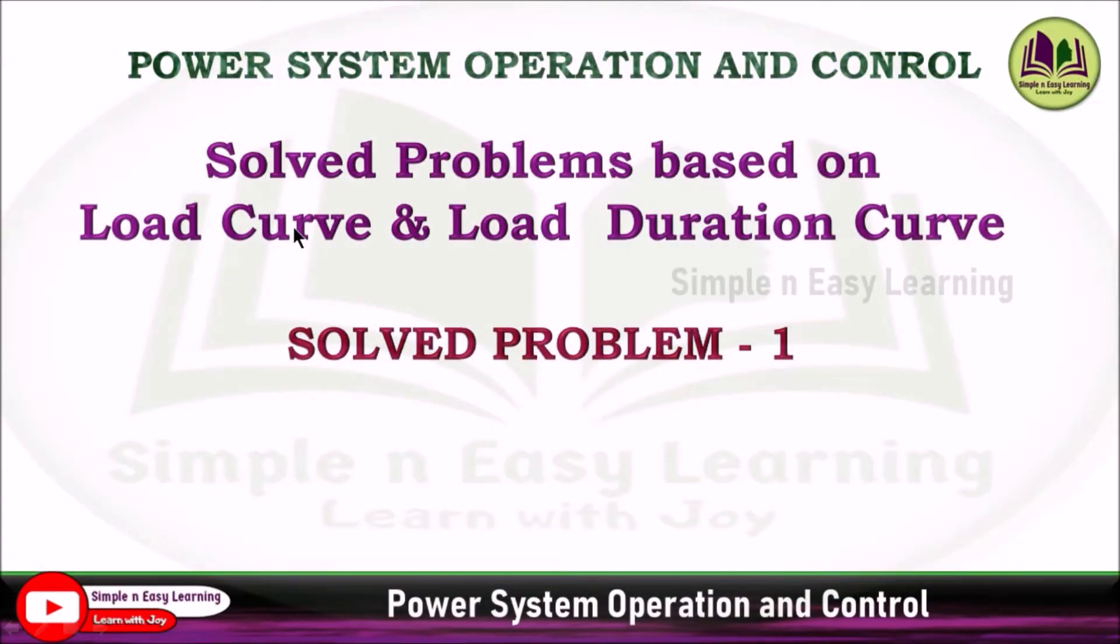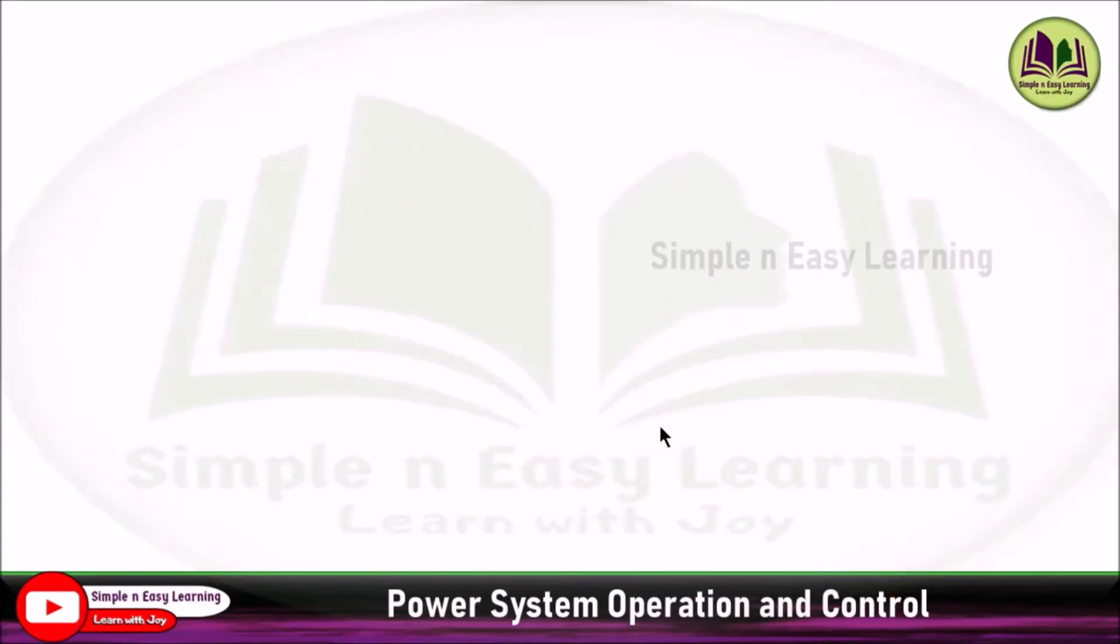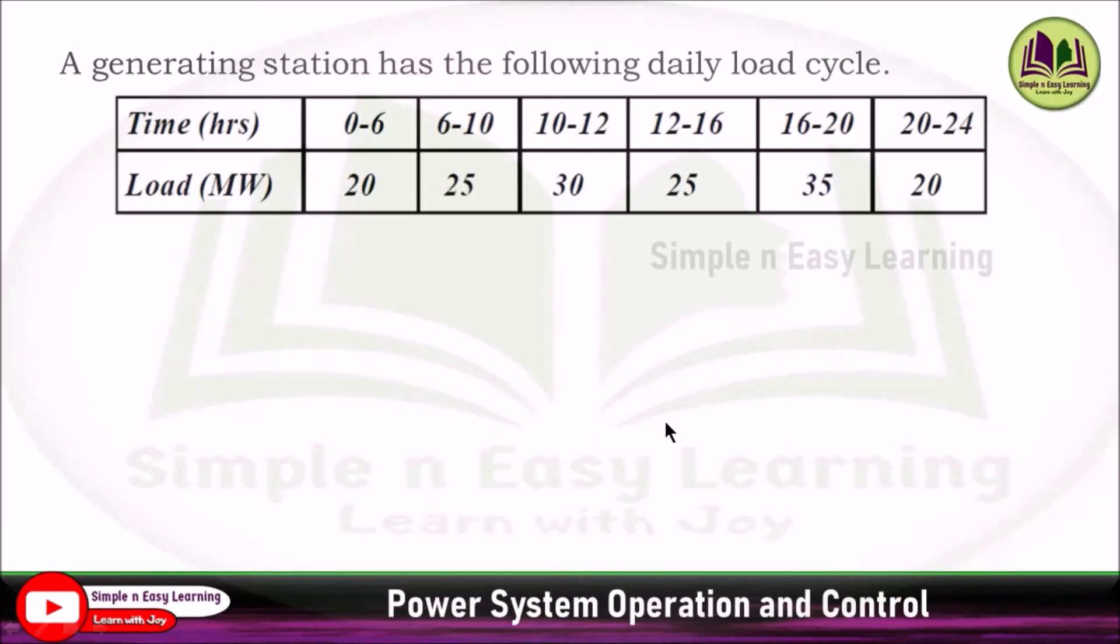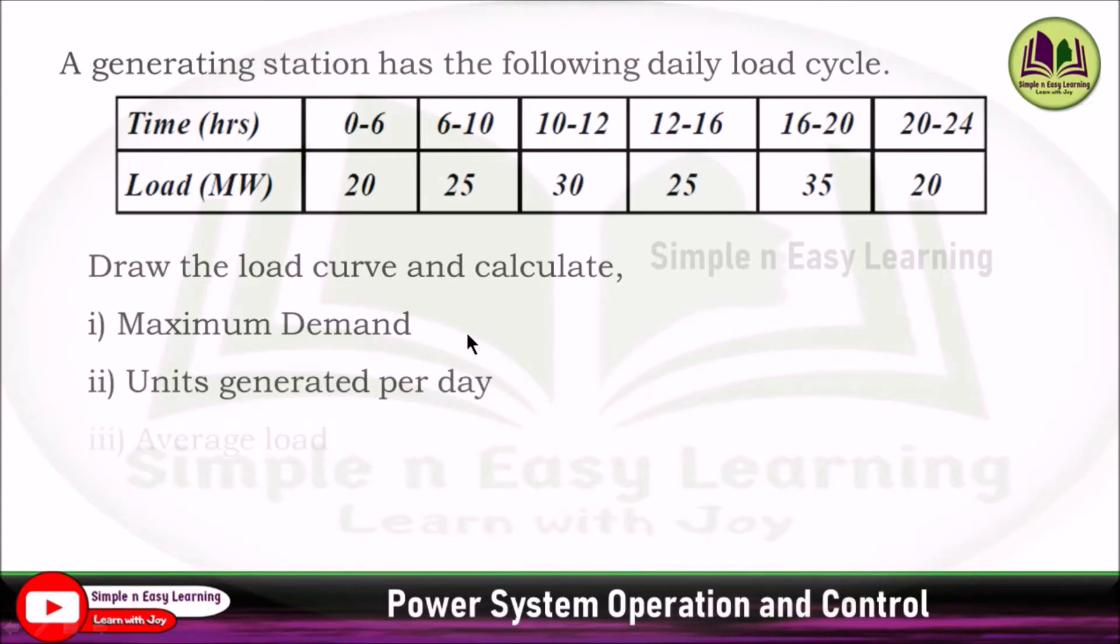Solved problem based on load curve and load duration curve. Problem 1: We will start with a very simple problem. A generating station has the following daily load cycle. The table is given: 0 to 6 hours 20 megawatt, 6 to 10 hours 25, 10 to 12 hours 30, 12 to 16 hours 25, 16 to 20 hours 35, and 20 to 24 hours 20 megawatt. Draw the load curve and calculate the maximum demand, units generated per day, average load, and load factor.